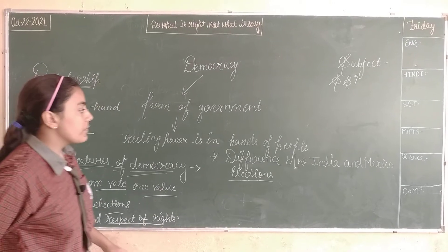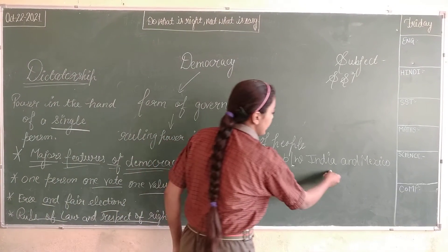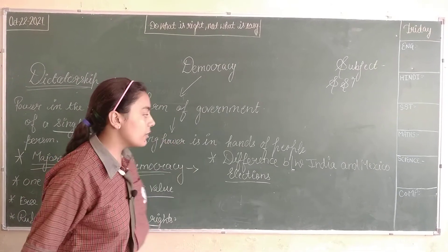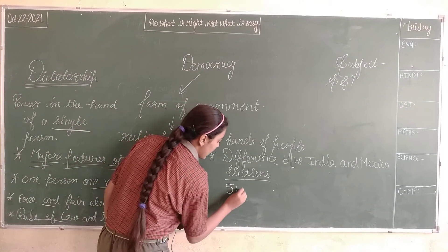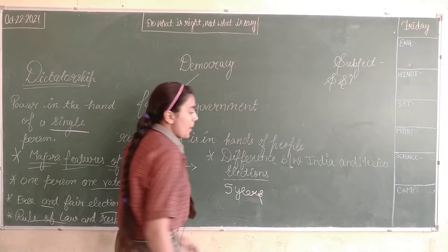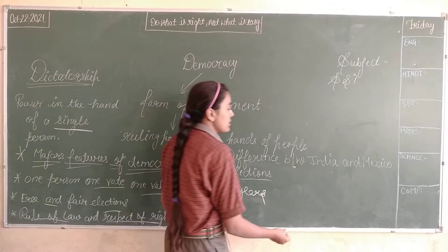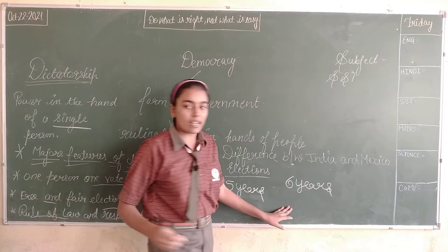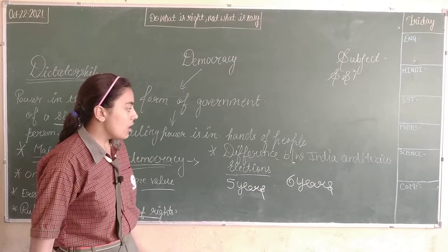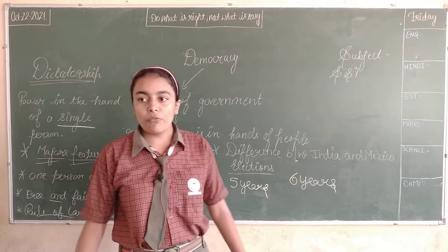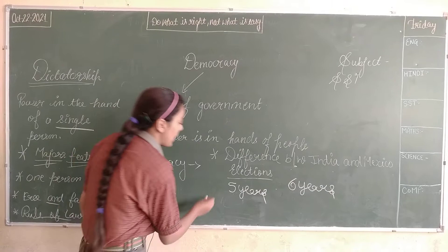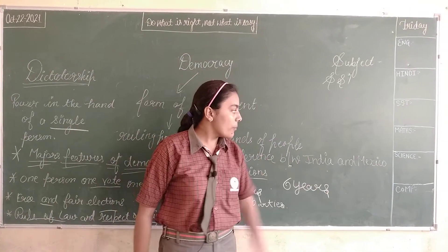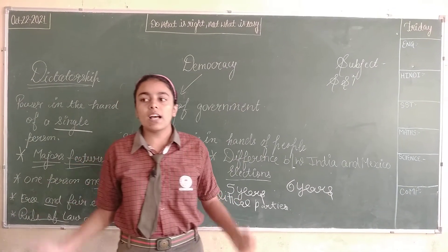Next is the difference between India and Mexico elections. In India, elections are regularly held after 5 years, while in Mexico they are held after 6 years. In India, political parties often lose elections, but in Mexico, PRI always wins the election.